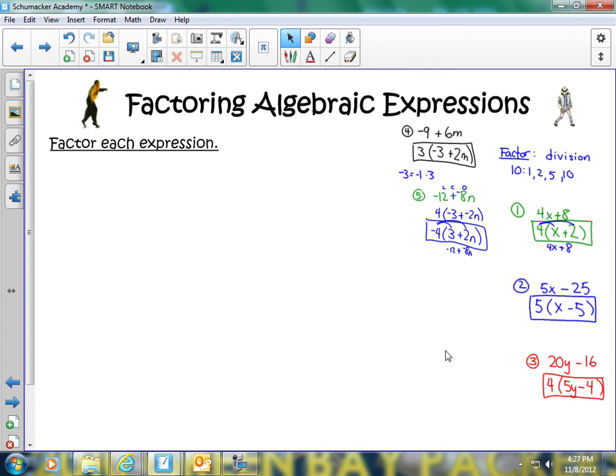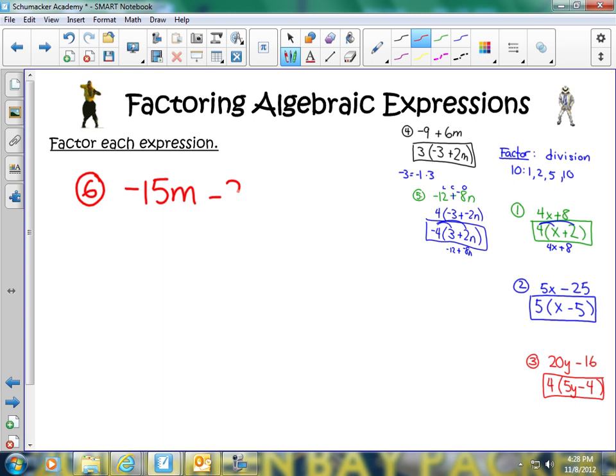We are almost done. You guys are doing wonderful. Let's try negative 15m minus 20. We've been down this path. We know what to expect. We're going to use our LCO again - leave, change, opposite. Now I know I can factor out a negative 5. Negative 15m divided by negative 5 will get me positive 3m. Bring down my addition sign. Negative 20 divided by negative 5 will get me positive 4. Positive 3 and positive 4 have nothing else in common factor-wise other than 1. We are done.